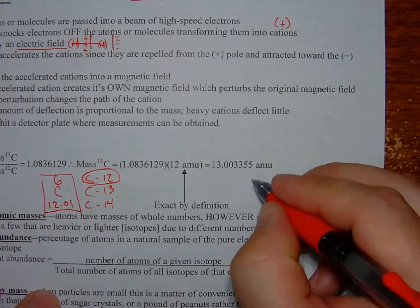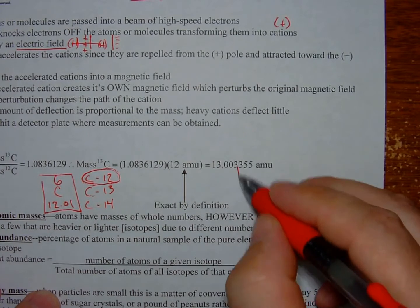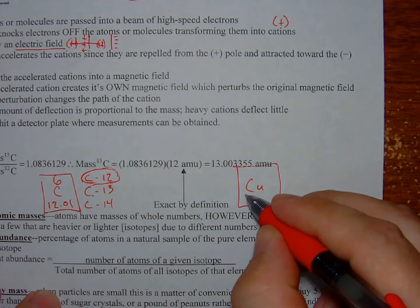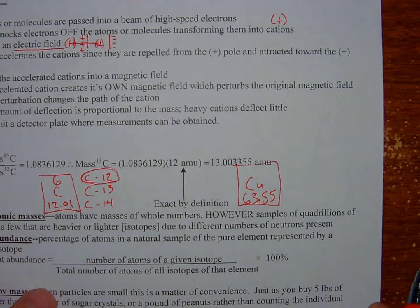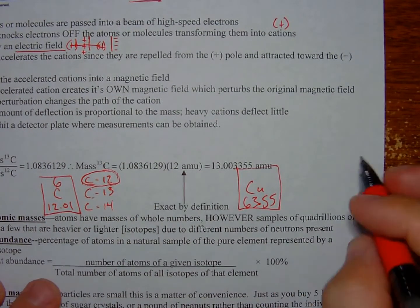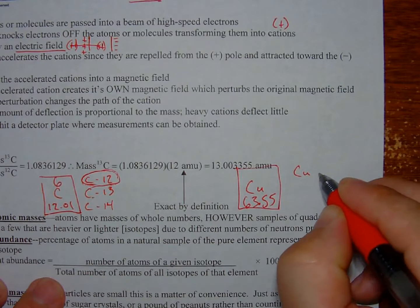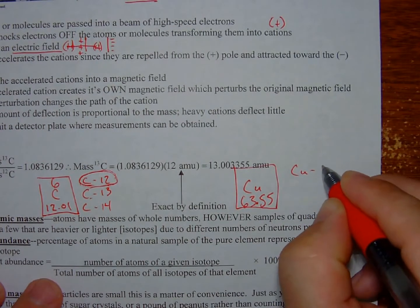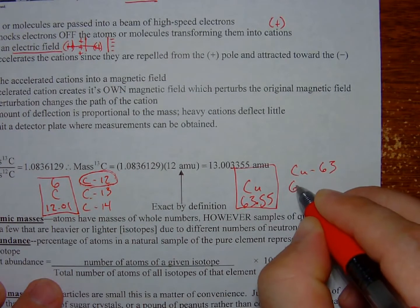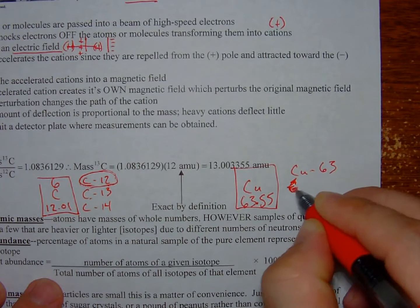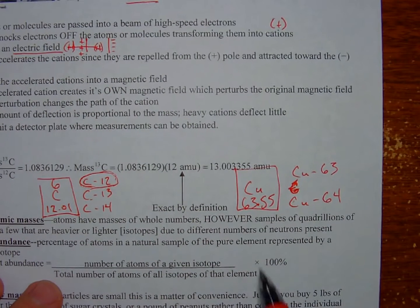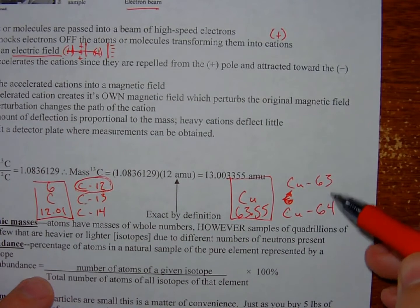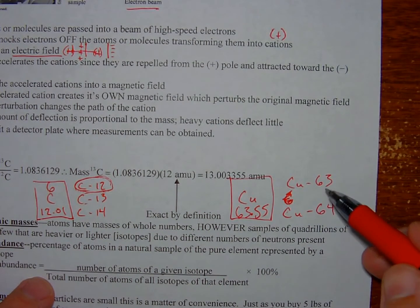Another example, let's look at copper. Copper has an average atomic mass of 63.55. This is a little bit more evenly distributed. There's going to be copper-63 and there's going to be copper-64. Now, because this is 63.55, this relationship, the abundance here, is going to be a lot closer to 50-50.